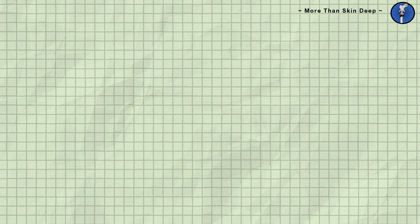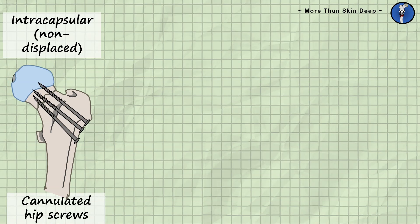For intracapsular fractures, we divide the treatment options depending on whether the two parts have become displaced or not. If the head is not displaced from the rest of the femur, you can use a method of internal fixation that utilises three cannulated screws arranged in a triangular fashion. This holds the two parts in alignment and encourages the bone to heal normally.